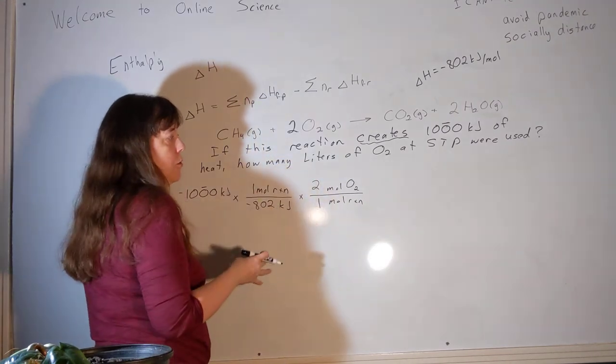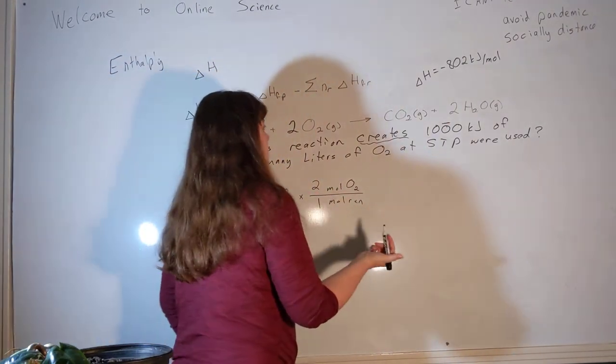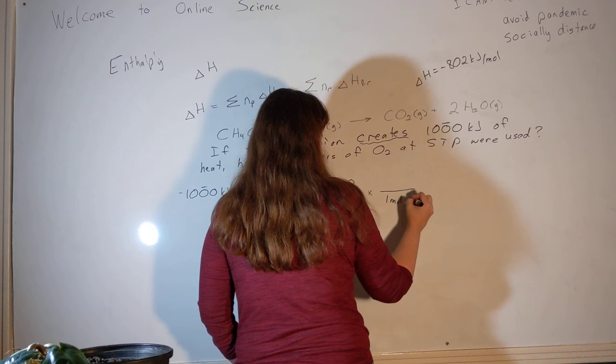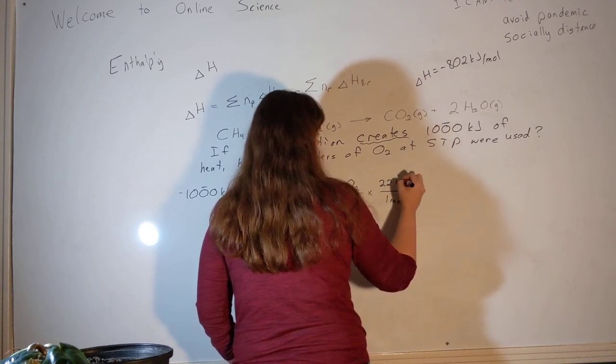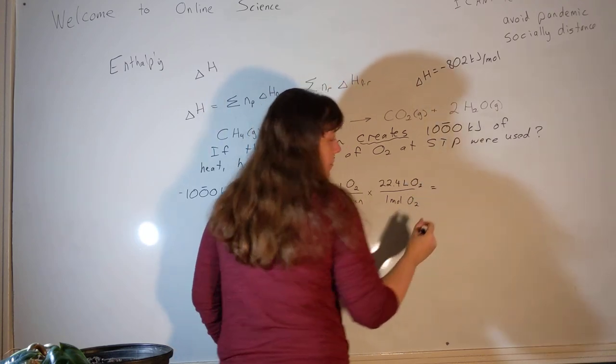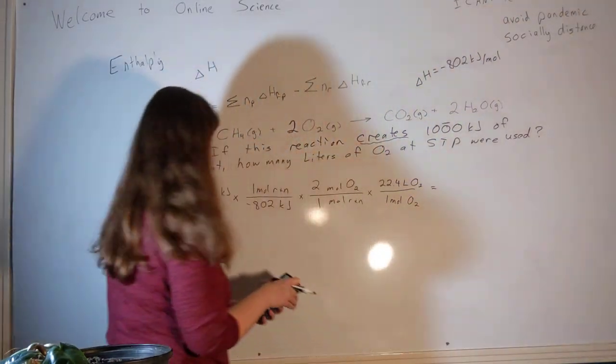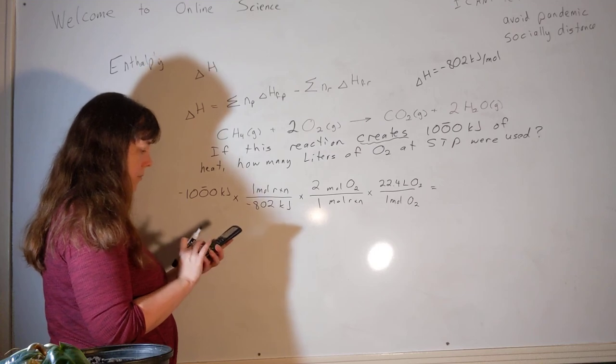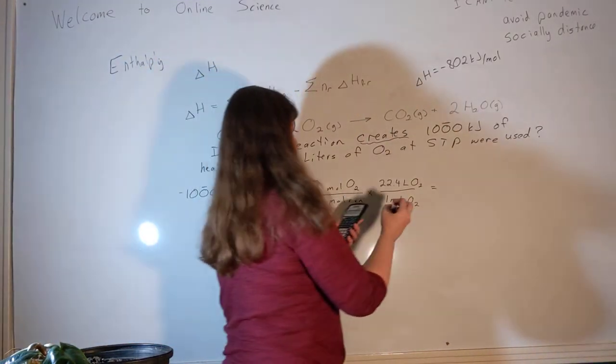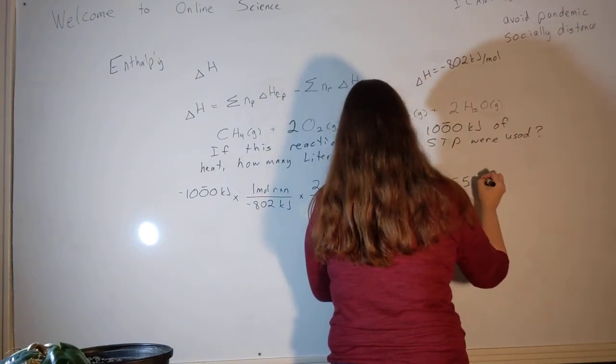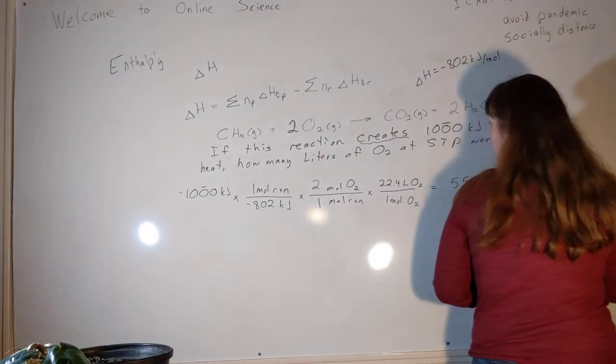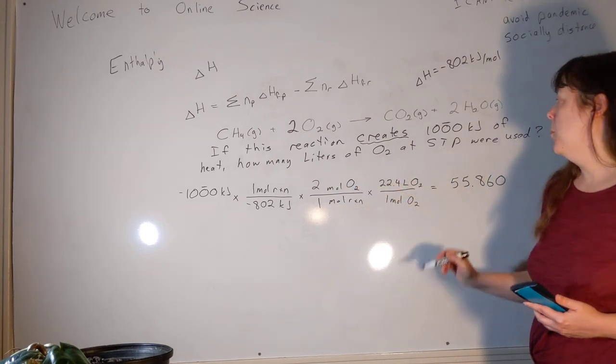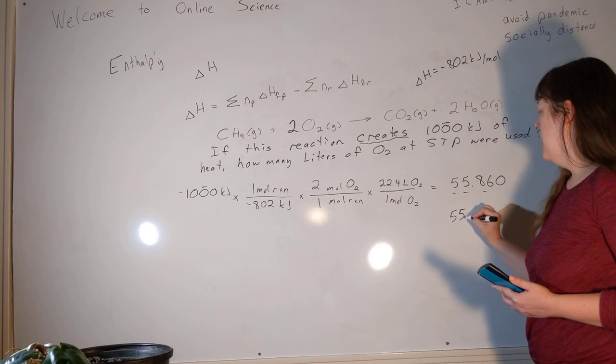All right. So we've changed it from heat to O2, but were we asked about moles of O2? No, we were asked about volume. So we're going to remember our nifty trick, which is that at STP, one mole of any gas occupies 22.4 liters. One of the more handy numbers in all of chemistry. All right. So negative 1,000 divided by negative 802 times 2 times 22.4 gives me 55.860. How many significant figures should we keep? We had three in the beginning, three in the delta H, three in our 22.4, and our mole ratio is exact. So we get to keep three. 55.9.